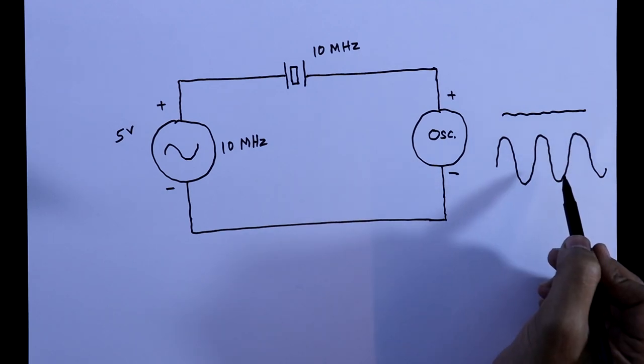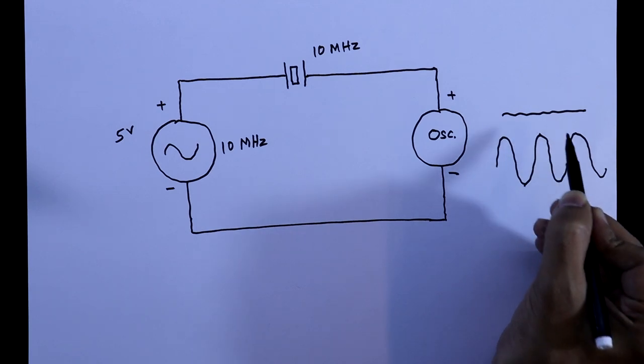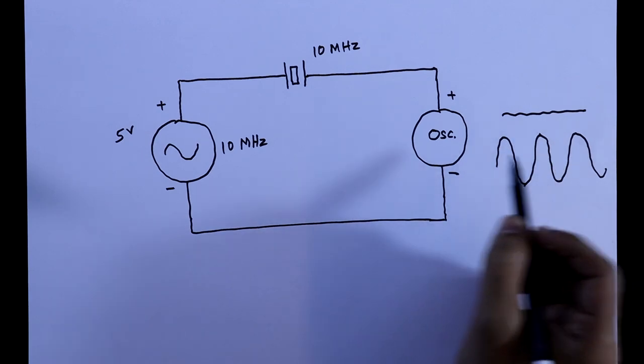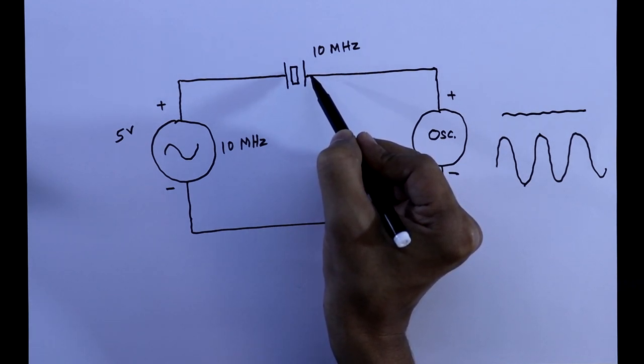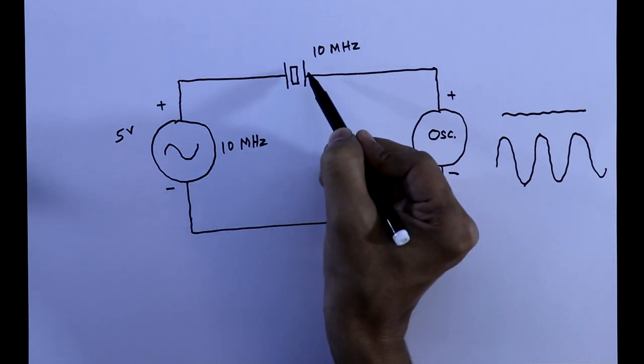And it will be more than 5V. The peak to peak voltage is more than 5V. If you are getting this, it means this one is working. It is because of the resonance frequency.